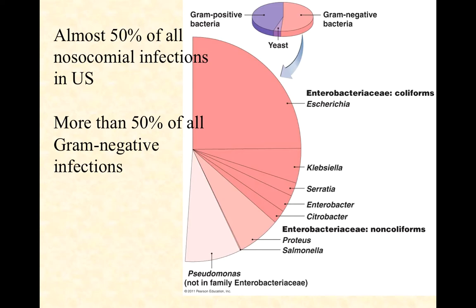Coliforms are going to be almost exclusively E. coli. After that we've got Klebsiella, Serratia, Enterobacter, and Citrobacter — these are also coliforms. There are a couple of non-coliforms listed here: Proteus tends to fall into the non-coliform category, and Salmonella falls into the true pathogen category. You can also see Pseudomonas, which makes up the other huge group — the other big slice of the gram-negative pie besides the Enterobacteria. Pseudomonas are related but not direct Enterics.